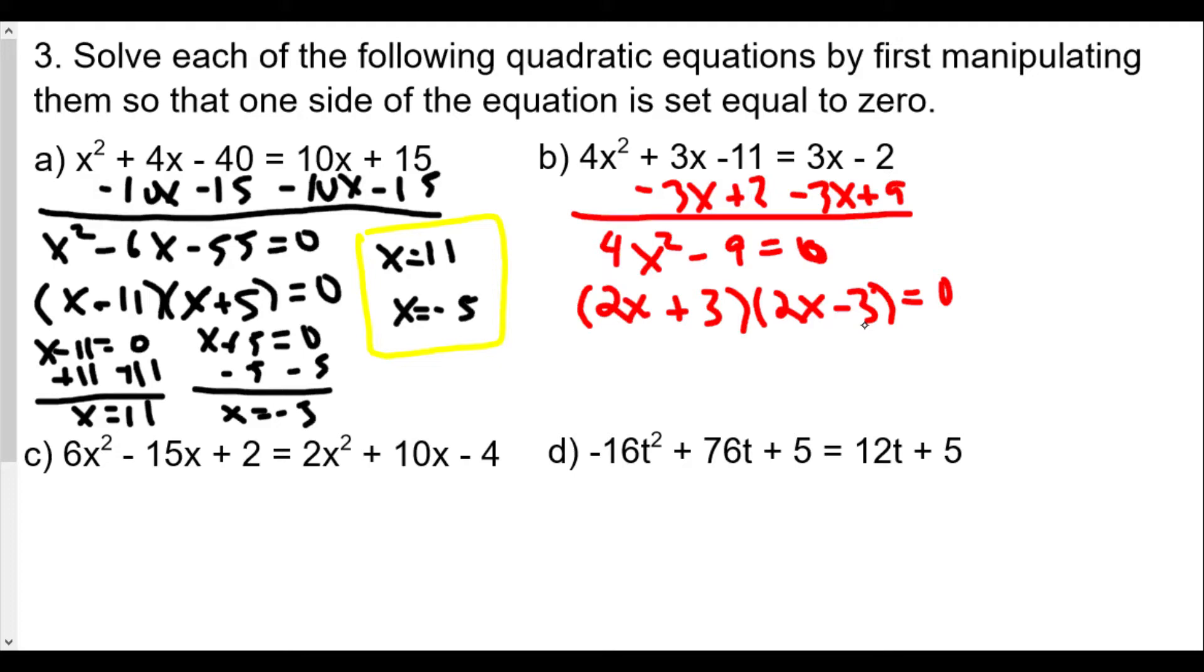Now we solve for each of these. We have each one equals 0. We have 2x + 3 = 0 and 2x - 3 = 0. Subtract 3 on both sides, 2x = -3. Divide both sides by 2, x = -3/2.